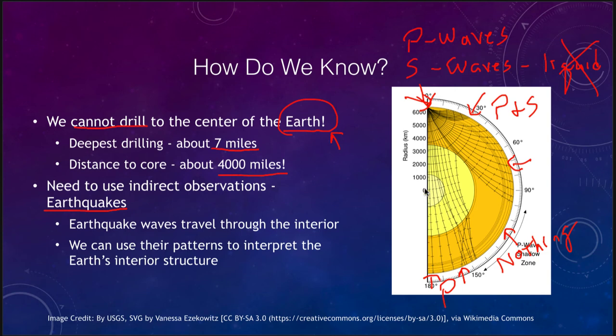Now what that tells us is that on this side of the Earth, these detectors only detect the P waves, meaning that those waves had to have traveled through a liquid to eliminate the S waves. On this section, the P and S waves are both detected. The fact that we get nothing in what we call the shadow zone here tells us something about how things are bent. Certain areas, the waves are getting bent by the changes in densities of material. And at the border, they're bent even more. So the waves coming through here that actually reach the core get bent significantly and actually end up coming out way over here. So as these waves travel through the interior, we use those patterns to interpret the Earth's interior structure.